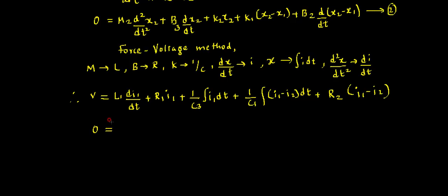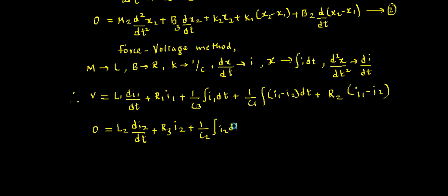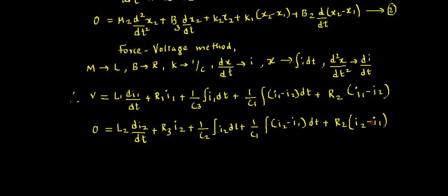Similarly, applying the force-voltage analogy to equation 2: 0 = L2·(di2/dt) + R3·i2 + (1/C2)·∫i2·dt + (1/C1)·∫(i2 − i1)·dt + R2·(i2 − i1). These are the two equations in electrical form.